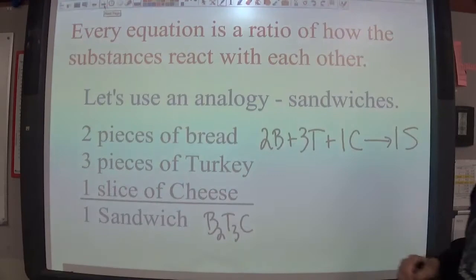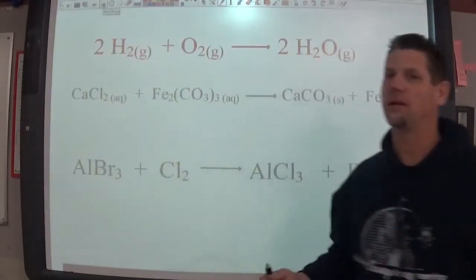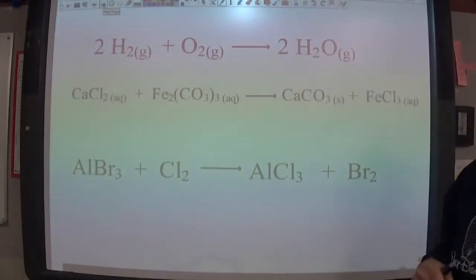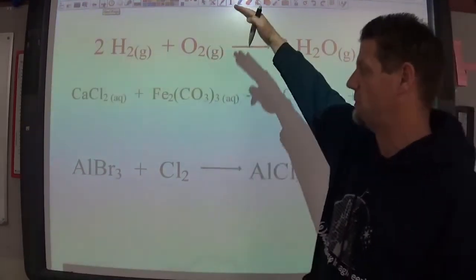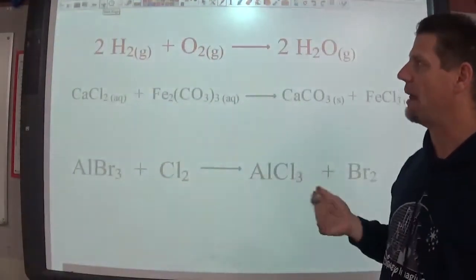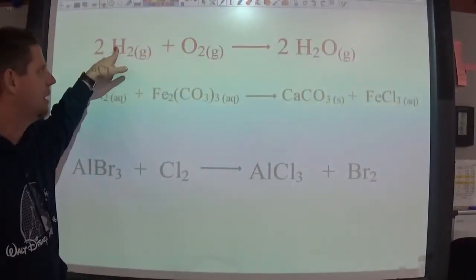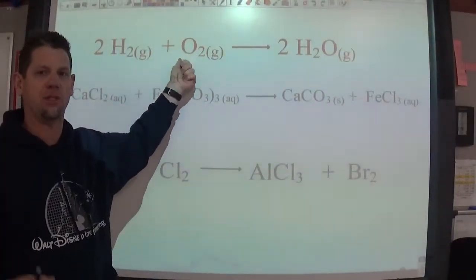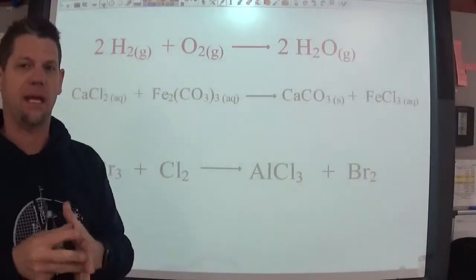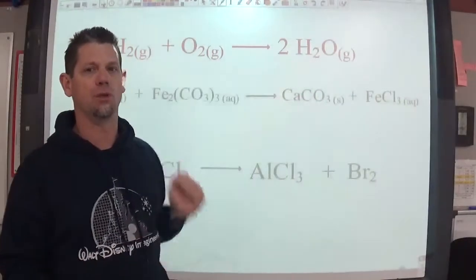Every equation is a ratio of how these substances react. And now if we look at a balanced equation like the one we did for water a long time ago. This first one's balanced. The other ones are not. So if we balance this equation what we're saying is that for every two moles of hydrogens I need one mole of oxygen available. And they will react together and form two moles of water.